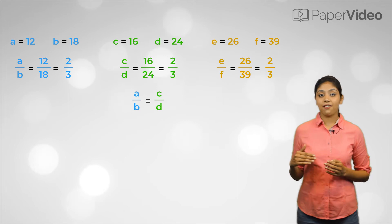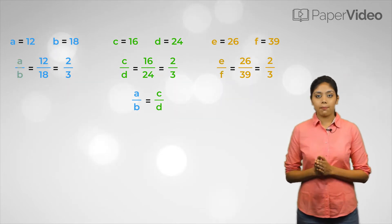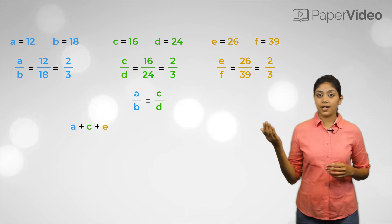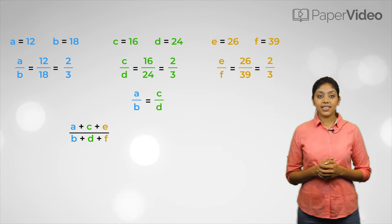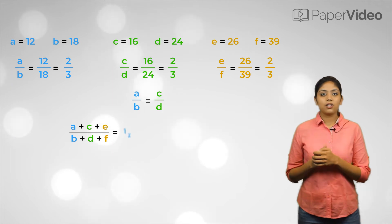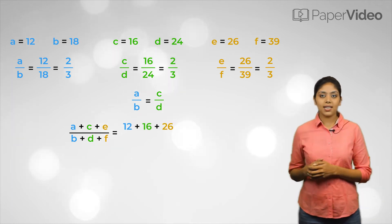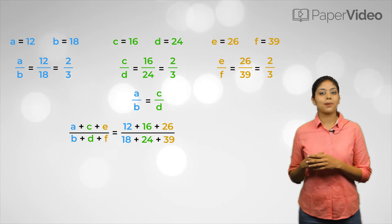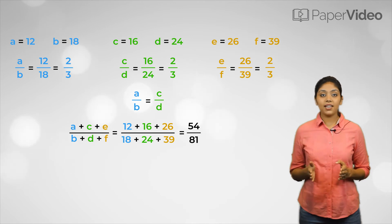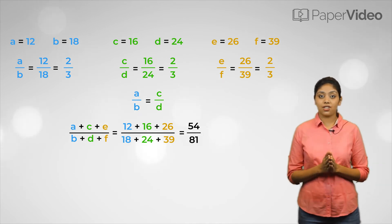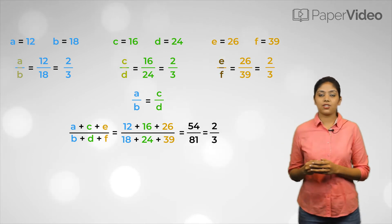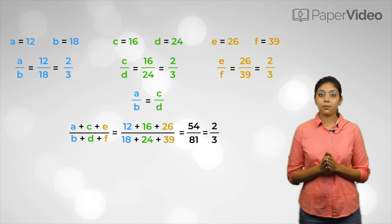This means that ratio e upon f is also equal to the ratios a upon b and c upon d. Let us now find the ratio of the sum of all three numerators to all three denominators. We get a plus c plus e upon b plus d plus f, equal to 12 plus 16 plus 26 upon 18 plus 24 plus 39, equal to 54 upon 81. Dividing numerator and denominator by 27, we get 2 upon 3, which equals all three ratios individually.